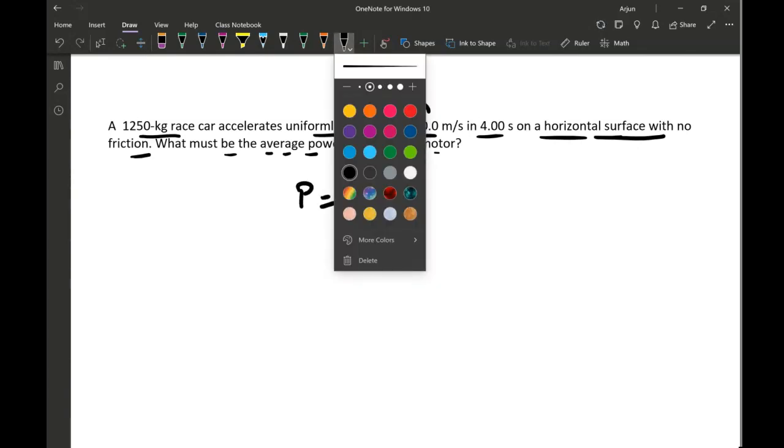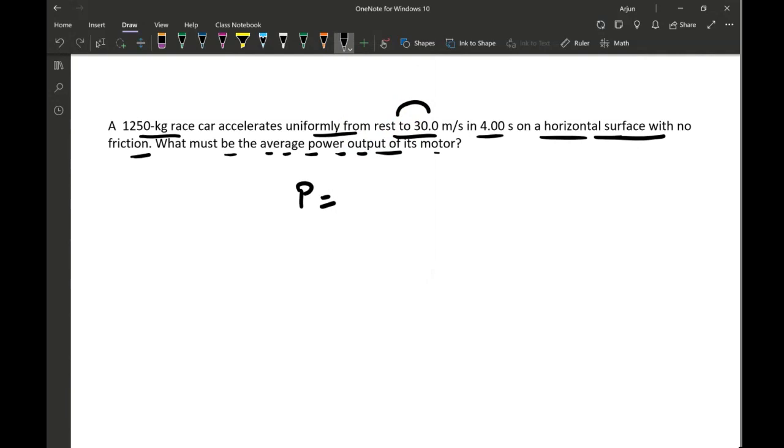Power output can be calculated from the same work done formula. Power equals work done divided by time. And work in this case is equal to force times displacement, displacement divided by time.